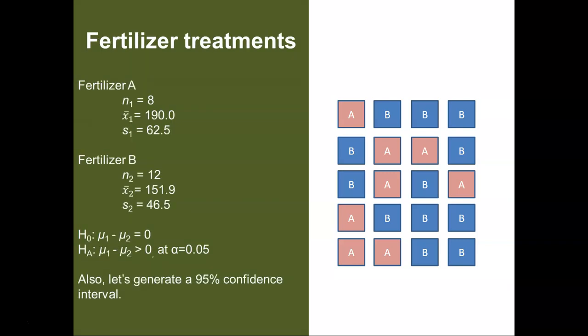To do this, we need to have some information from both of the samples. And so here are the summary statistics for both samples. For fertilizer A, we took eight observations with an average corn yield in bushels per acre of 190.0 and a standard deviation of 62.5. For fertilizer B, we took 12 samples or 12 fields. The average yield was 151.9 bushels per acre with a standard deviation of 46.5.